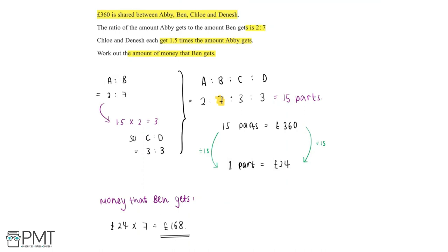This question is worth 4 marks. We get the first mark for saying that the ratio of Chloe to Dinesh is 3 to 3. We get the second mark for stating the full ratio A to B to C to D is 2 to 7 to 3 to 3 and totaling this to 15 parts. We get the third mark for finding the value of 1 part, which is £24. Finally, we get the fourth mark for recognising that Ben gets 7 parts, so the amount Ben gets is £24 multiplied by 7, equal to £168. We've now achieved the full four marks needed in this question.